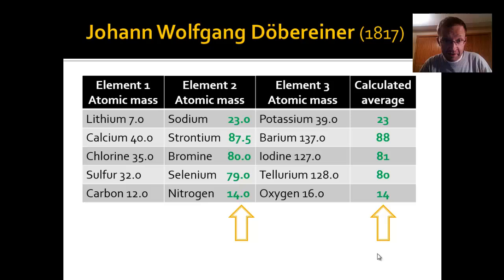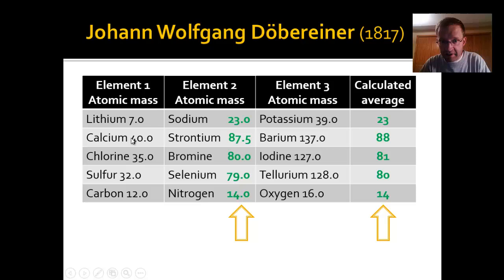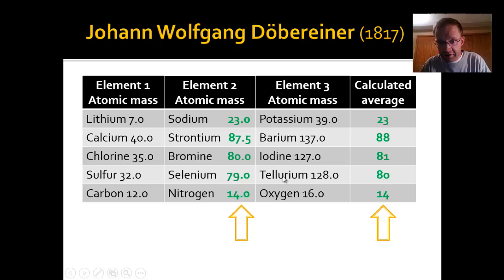Here are five sets of three elements considered triads of Döbereiner. Lithium's mass is about 7 AMUs and potassium's is about 39; averaged together they give 23, which is sodium's mass. Calcium is about 40 AMUs and barium about 137, averaging to around 88 — strontium's mass is 87.5. Chlorine and iodine average to bromine's mass; sulfur and tellurium to selenium's; and carbon and oxygen average to 14 AMUs, which is nitrogen's mass.